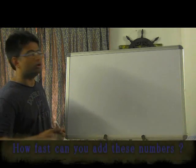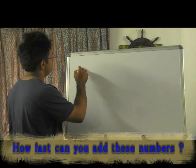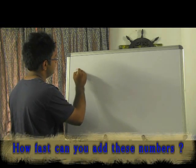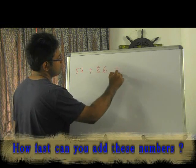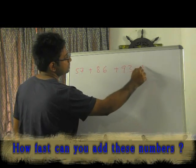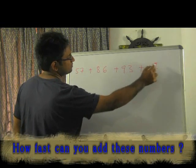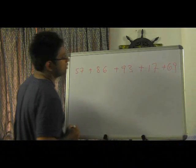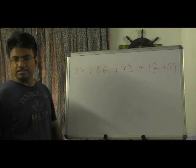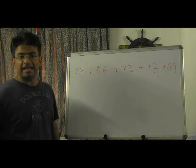Give me some two-digit numbers now. 57, okay. 86. 93, alright. 17, yes. 69, alright. So let's try to add these numbers and once again I'll be using the jumping up 10 technique.